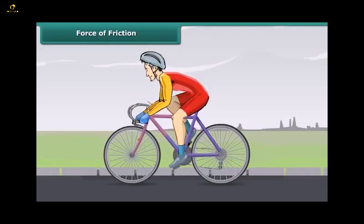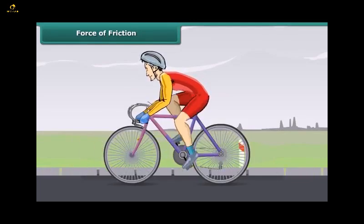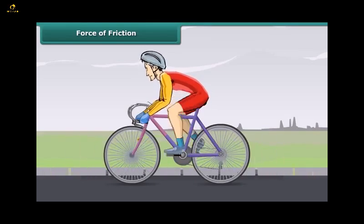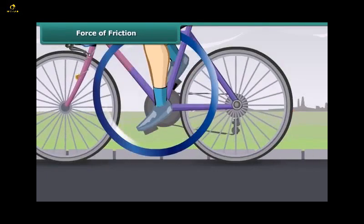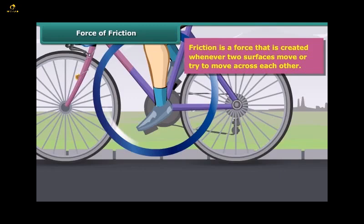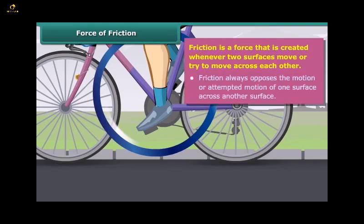Let's take an example from daily life. While moving on a bicycle on the road, you pedal the bicycle and it moves on and on. When you stop pedaling, the bicycle slows down and gradually comes to a stop. Why does this happen? This actually happens because of friction. Friction is a force that is created whenever two surfaces move or try to move across each other. Friction always opposes the motion or attempted motion of one surface across another surface. The force which resists the motion of a body while moving on a surface is called friction.